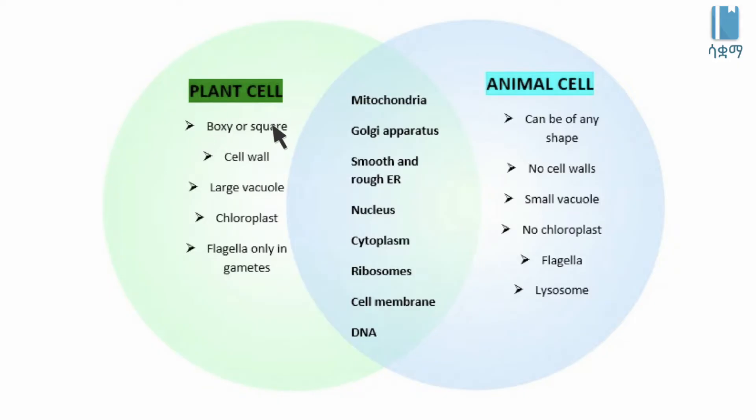Structures found only in plant cells include: cellulose cell wall, large vacuoles, and chloroplasts. Flagella are found only in gametes.